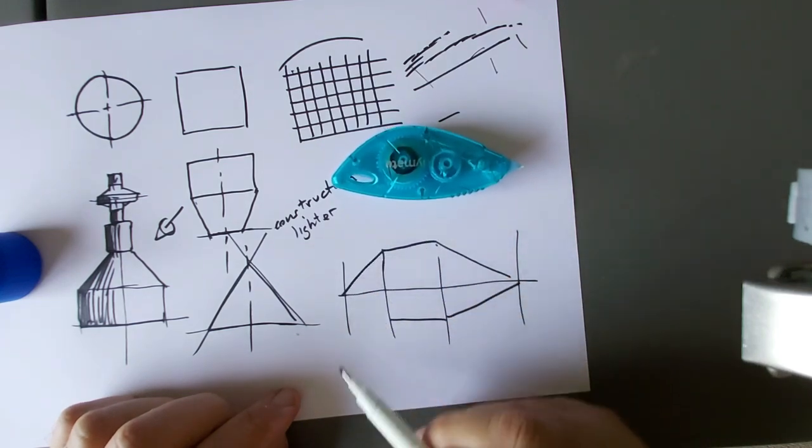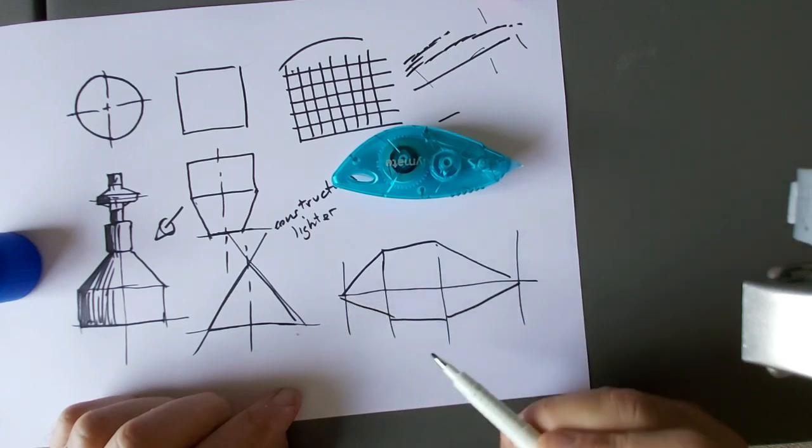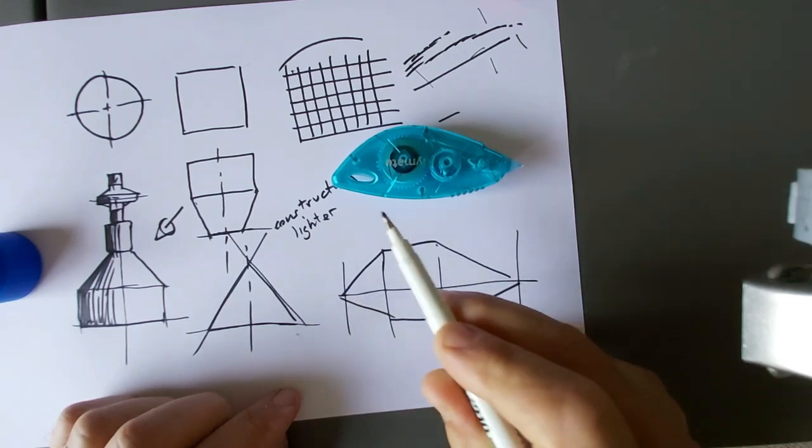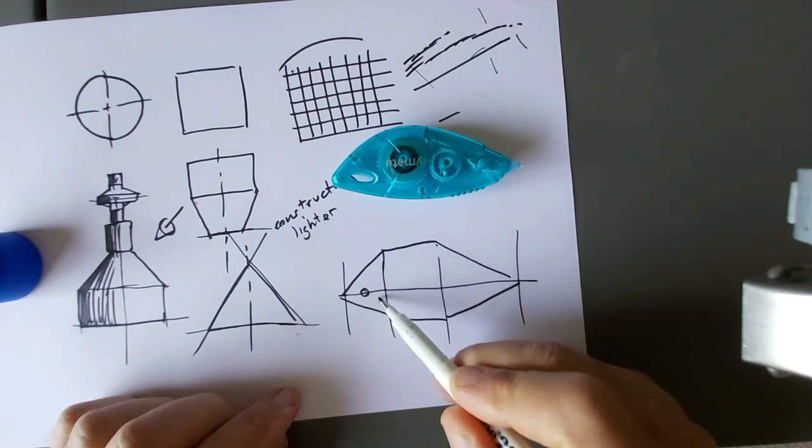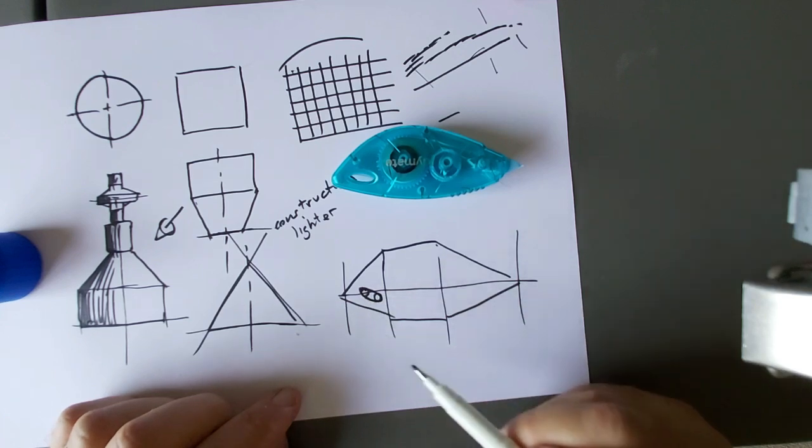And then I've got a little hollow section over there. So that's just like two circles joined by a square. Like that.